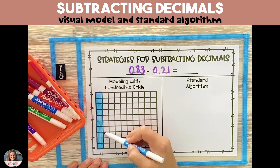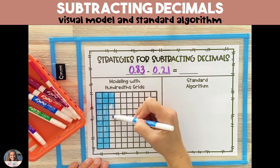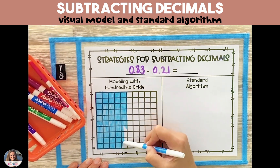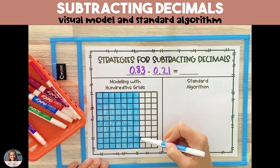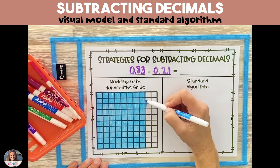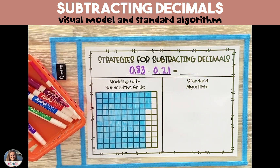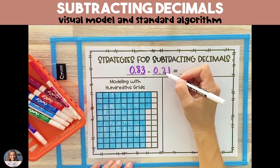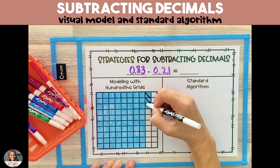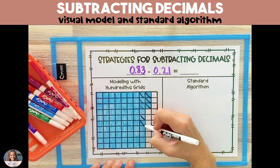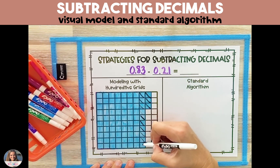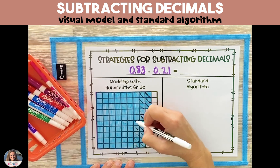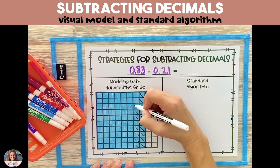We'll start by shading in 83 hundredths — that's how much we have to begin with. From there, we're going to start at the last shaded square and slowly cross out 21 hundredths one by one.